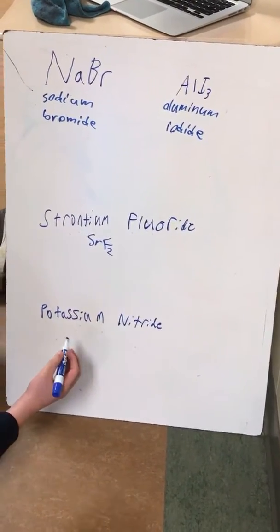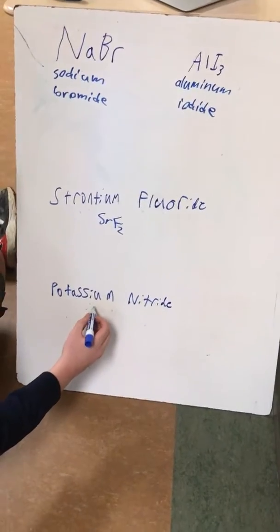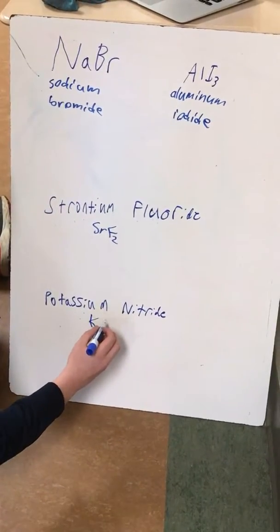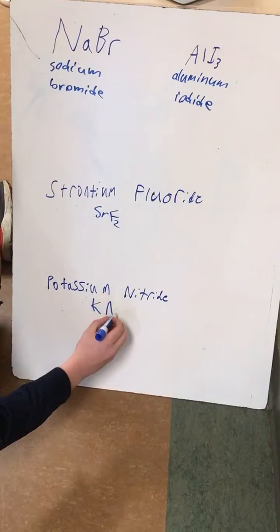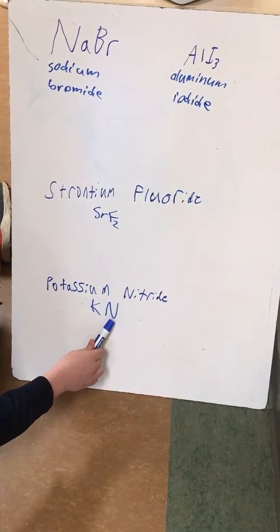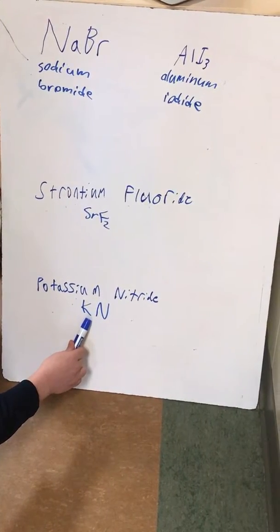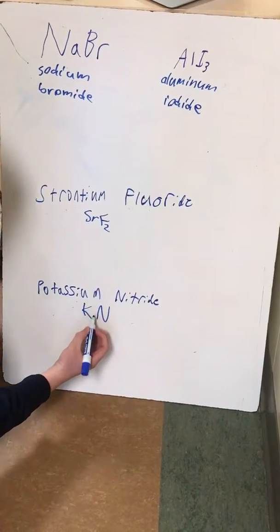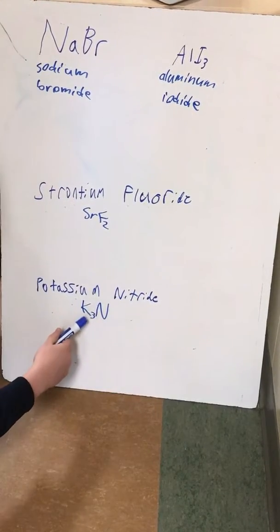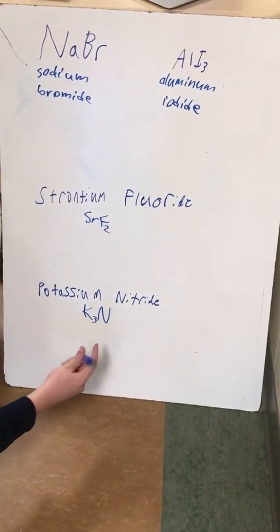Now potassium nitride. Potassium is K and nitrogen is N. Nitrogen has a charge of -3 and potassium has a charge of +1, so to balance this we just have to have three potassiums and one nitrogen.